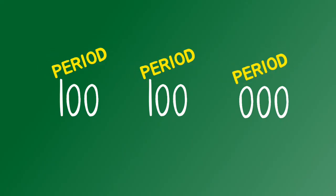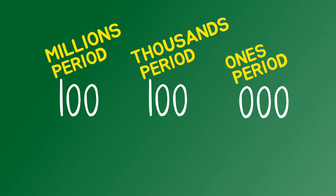Digits in larger numbers are in groups of three places. These groups are called periods. Ones period, thousands period, millions period, and many more. Periods are separated by space or commas.